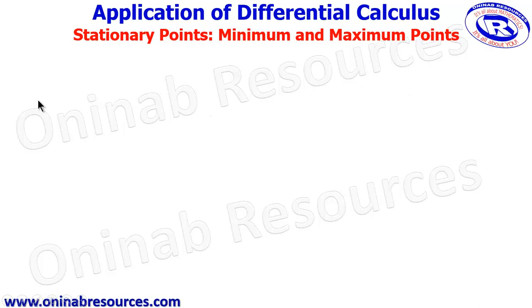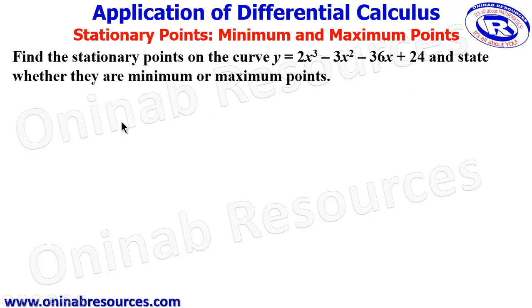So we now look at our problem. Find the stationary points on the curve y equal to 2x cubed minus 3x squared minus 36x plus 24, and state whether they are minimum or maximum points.